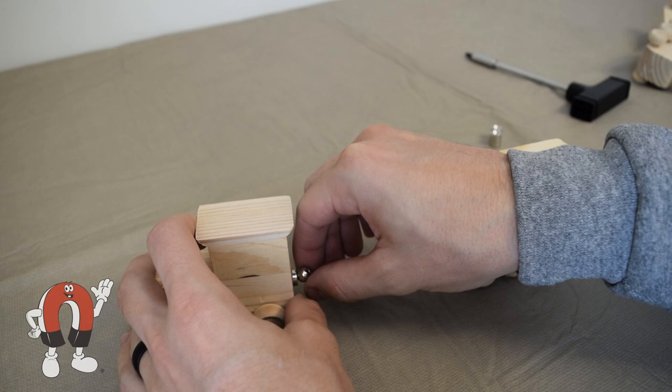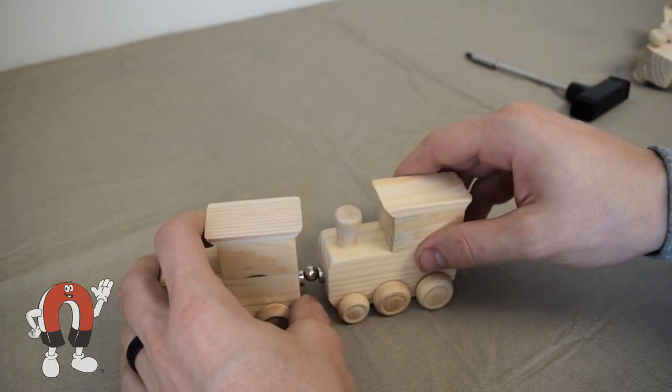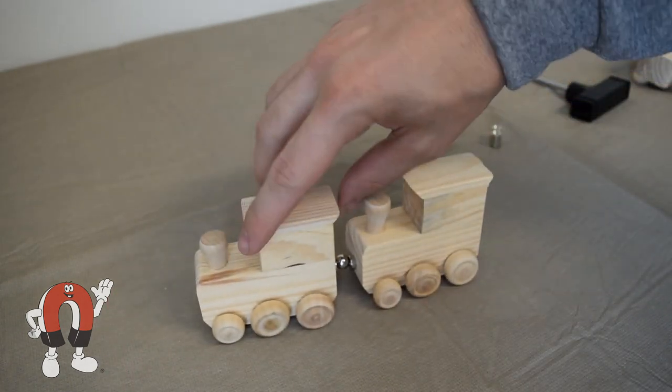We added a steel bearing in between the magnets which did allow for turning but it didn't quite have the look of a normal magnetic train set.